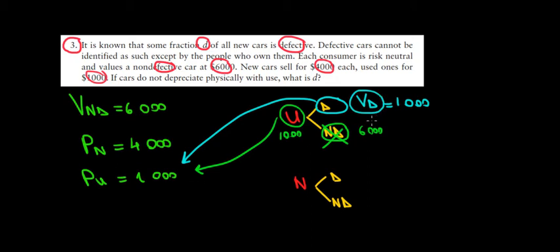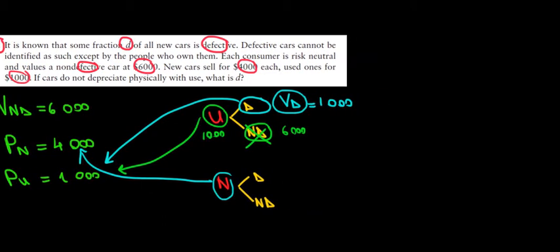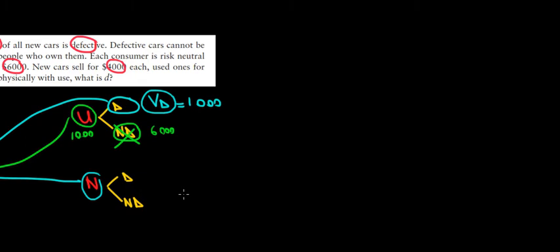That matters because we need the value of a defective car to solve on. We now know the value of a defective car. New cars also have a probability of being defective or non-defective, and the price for a new car is four thousand dollars. If consumers are paying four thousand dollars, they're not paying only for non-defective cars — they know there is a risk of having defective cars, so they take this risk into account by computing the expected value of a new car.